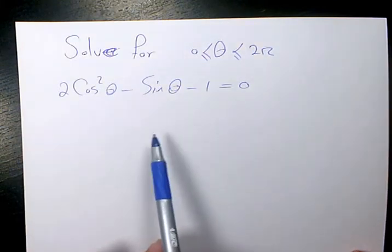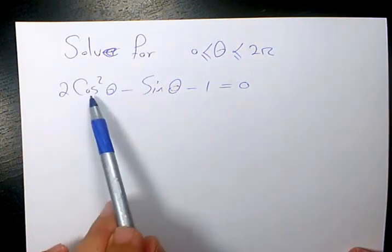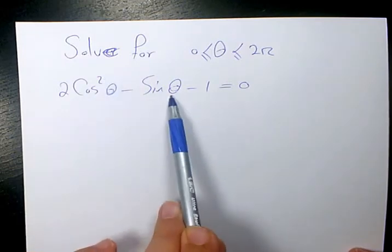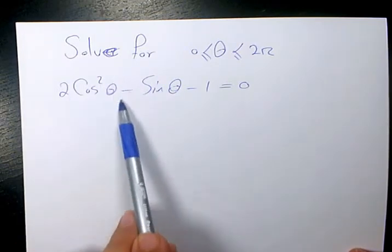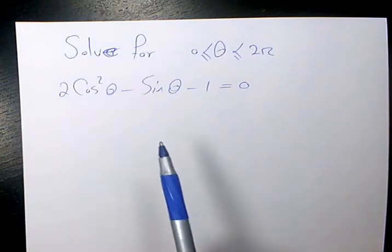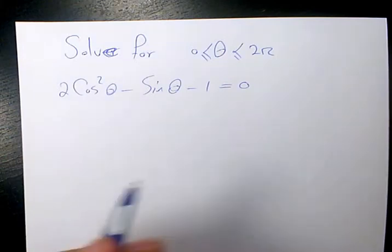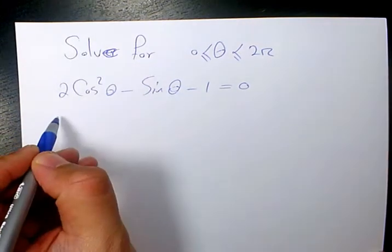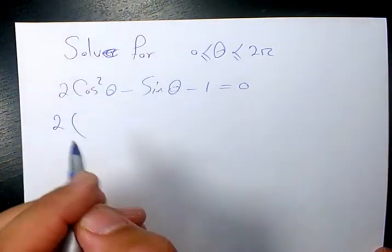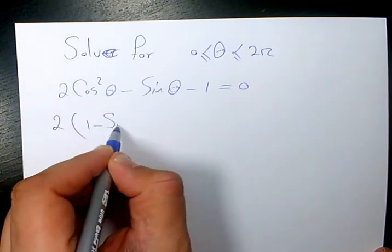As you can see, we have cosine squared theta and we have sine, so it's better to change this cosine squared theta to something related to sine. From trigonometric identities, we know that sine squared theta plus cosine squared theta equals 1.